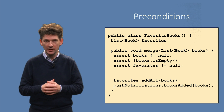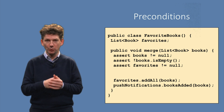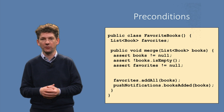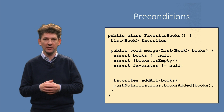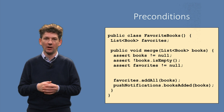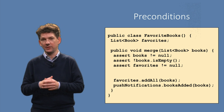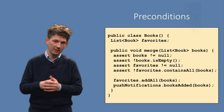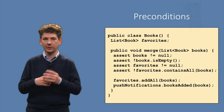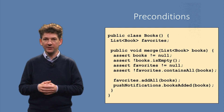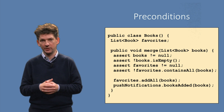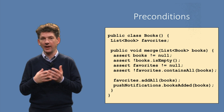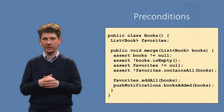Last but not least, we want the books to be merged to be new. We only want to send out notifications for books not yet part of your favorites. Let's also add this as an assertion. This gives us a total of four preconditions. If they are met, the method can do its work — it can add the new books to the favorites and notify interested parties.